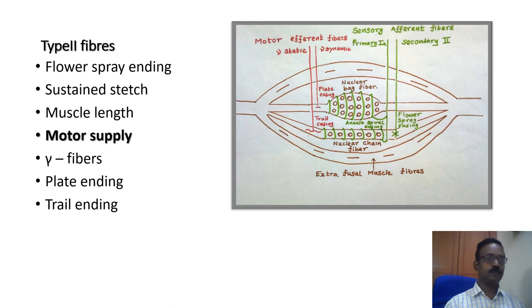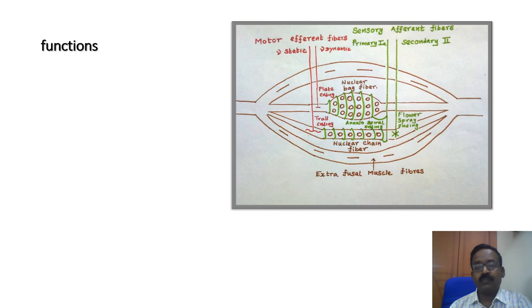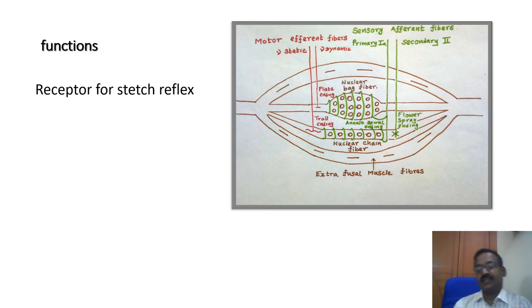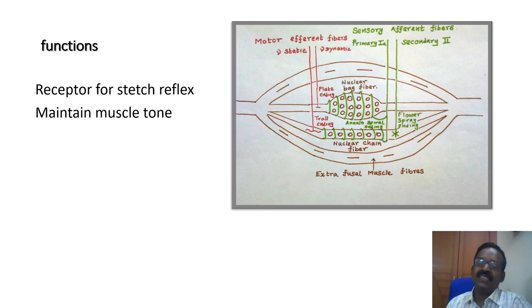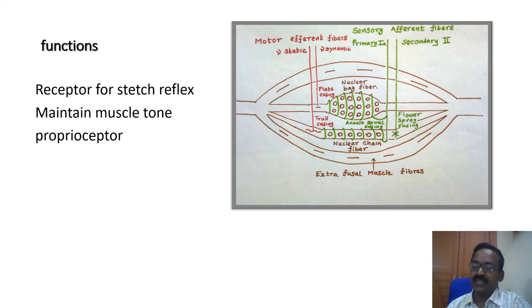Functions of the muscle spindle: the muscle spindle is the receptor organ for the stretch reflex. It is important for maintaining muscle tone through gamma motor neuron activity. The muscle spindle is also important for the maintenance of posture, especially the standing posture, through the production of stretch reflexes. It also acts as a proprioceptor, providing unconscious proprioceptive sensation and conscious kinesthetic sensation, with proprioception, posture, and movement regulated by the stretch reflex.